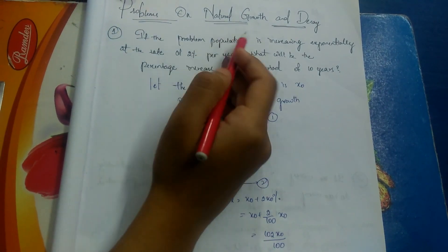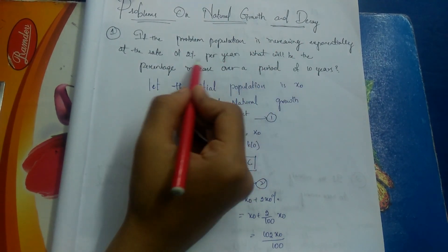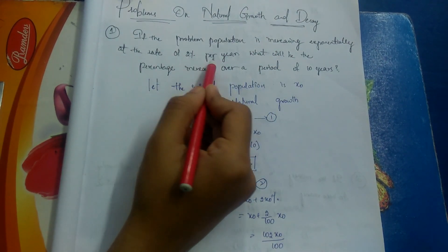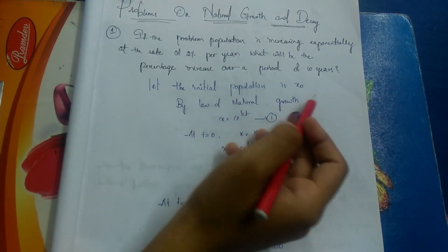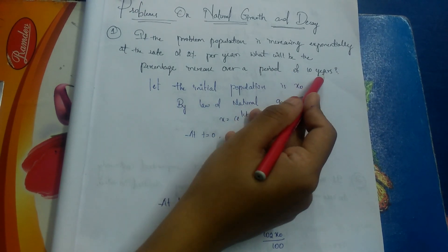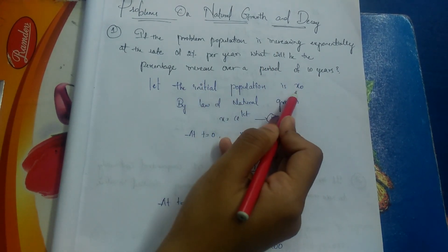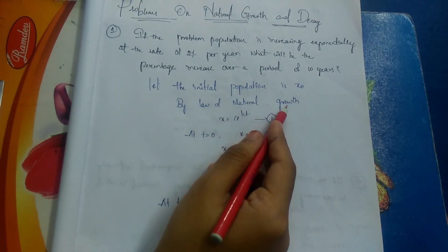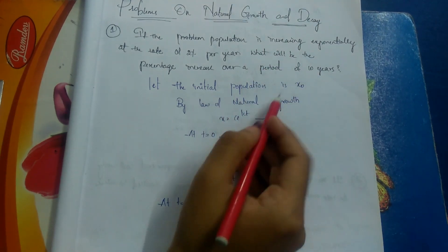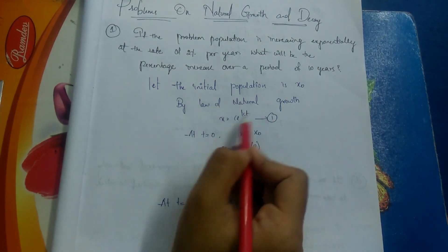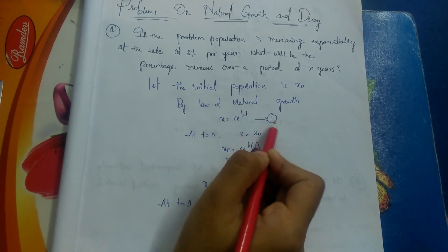Let's see a few more problems on natural growth. If the population is increasing exponentially at the rate of 2% per year, what will be the percentage increase over a period of 10 years? We have to find x when t = 10 years. Let the initial population be x₀. By the law of natural growth, the formula is x = c · e^(kt). Let this be equation number 1.